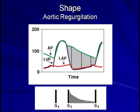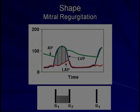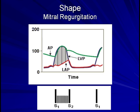Next, we have mitral regurgitation. The pressure gradient between the left ventricle and the left atrium remains relatively constant throughout systole, resulting in a uniform or holosystolic shape.